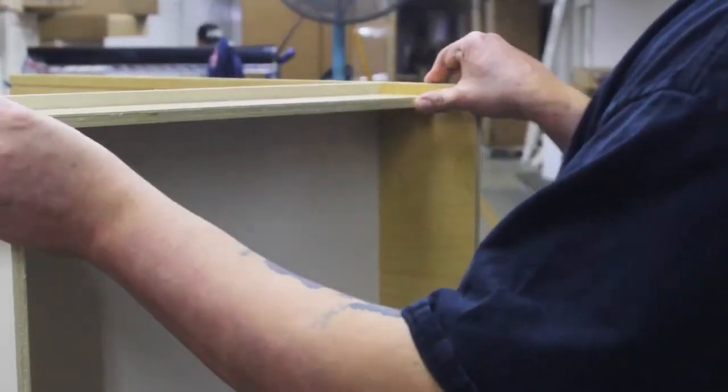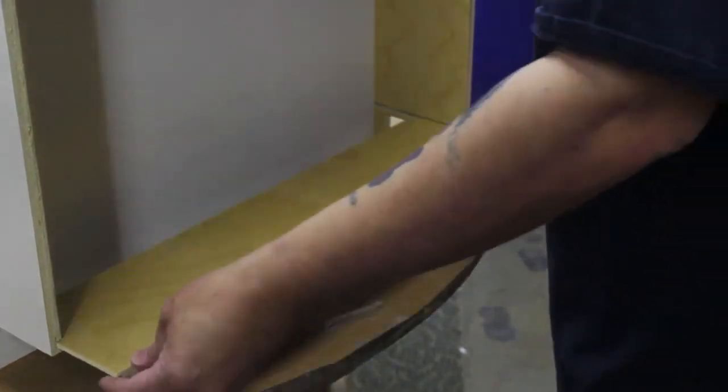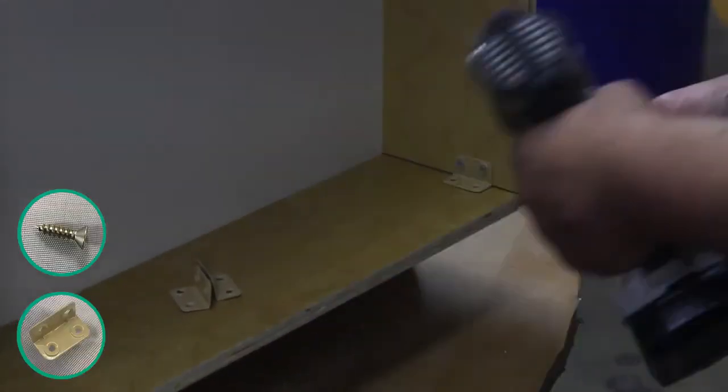Locate the small and large toe kicks. Slide them into place using the dovetail. The large toe kick should be placed at the front of the cabinet and the small toe kick should be placed at the back.